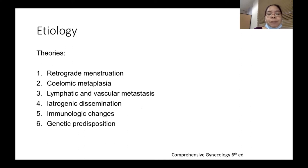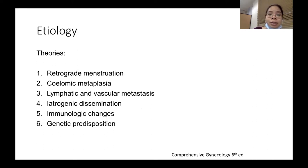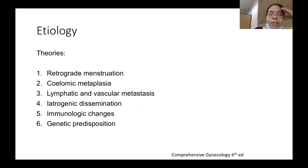Celomic metaplasia is the theory that explains the presence of endometriosis in patients who are not menstruating — such as patients born without a uterus, adolescents who are not yet menstruating, and even male patients. There are rare findings of endometriosis in men, explained by celomic metaplasia.